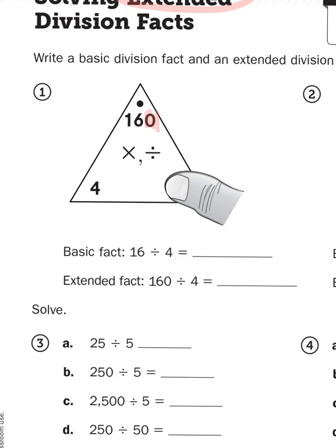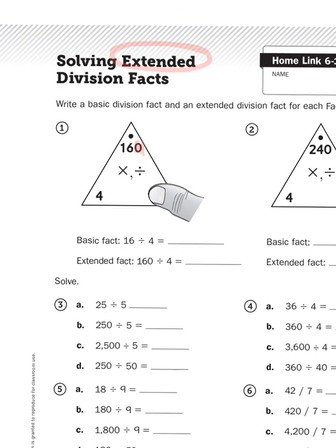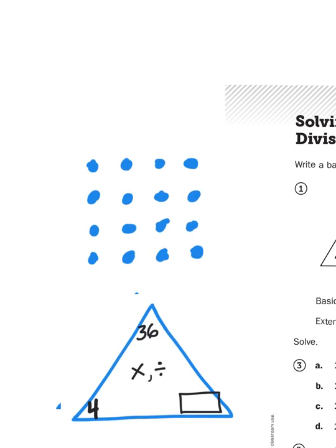Now, if you recall, multiplication and division are interrelated. They are kind of mirror images of each other. So for every multiplication fact, there is a division fact that is kind of its mirror opposite. What do I mean by that? Let's take a look at this array.